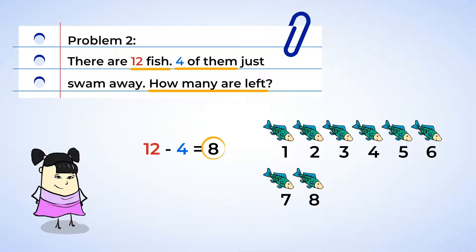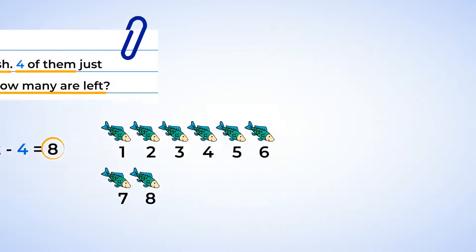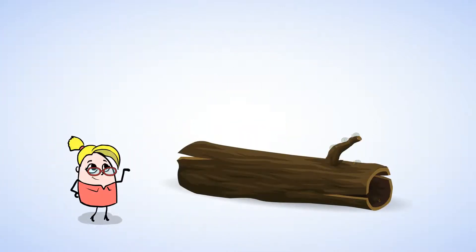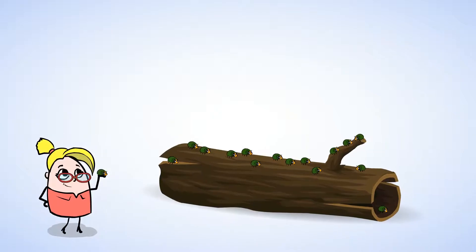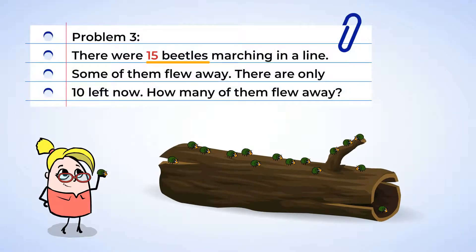We're having so much fun making math sentences in the forest. Let's try to do one more. Wow, what's that crawling over there on the log? Beetles. There are fifteen beetles marching in a line. Oh, some of them just flew away. And now there are only ten left. How many of them flew away?